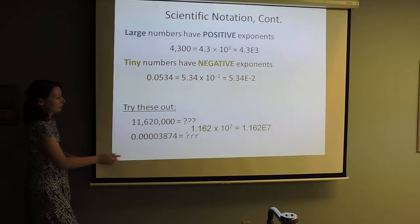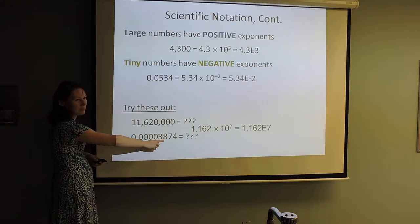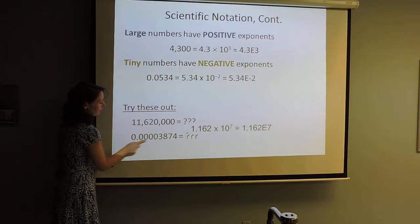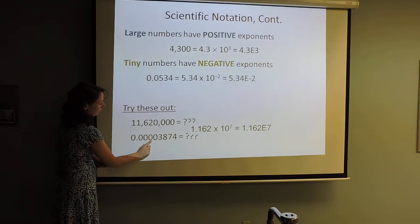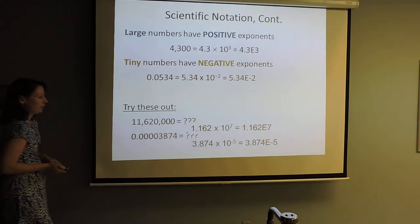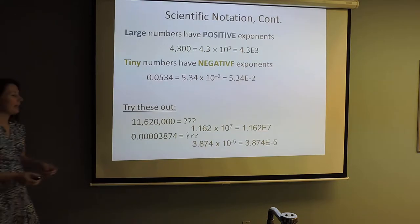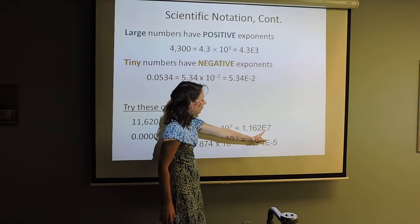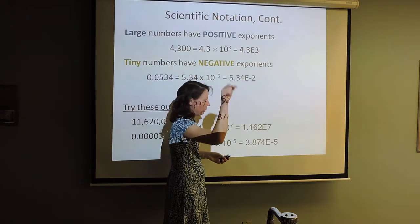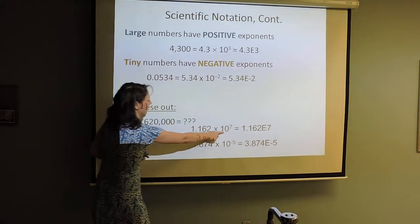For the small number, is it going to have a positive or negative exponent? Negative — because the decimal needs to move to the right. 1, 2, 3, 4, 5 — the decimal needs to be between the 3 and the 8 — so it's 3.874 times 10 to the negative 5th. And again, you can use the uppercase E format: 1.162E7 is the same thing as 1.162 times 10 to the 7th in your calculator.